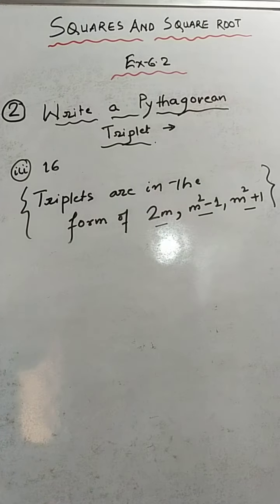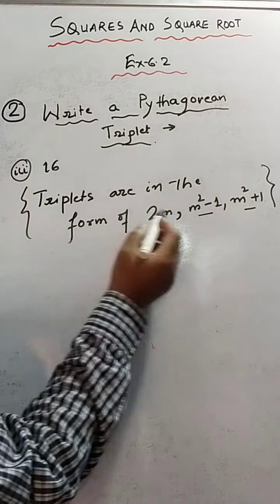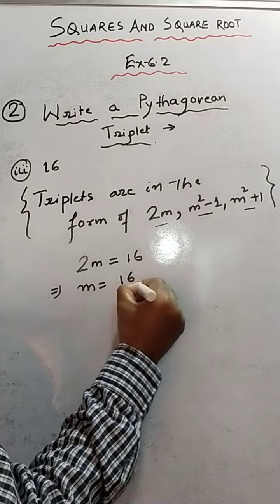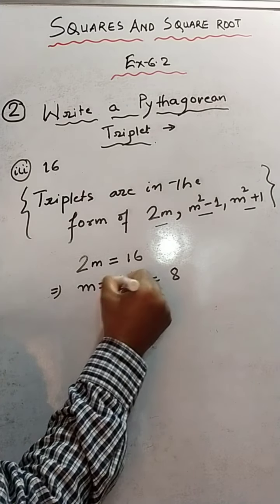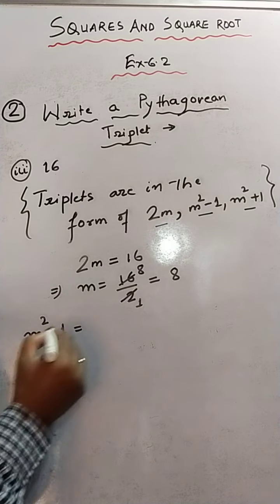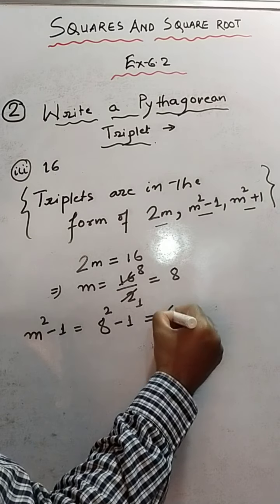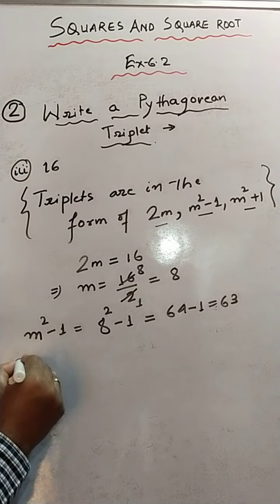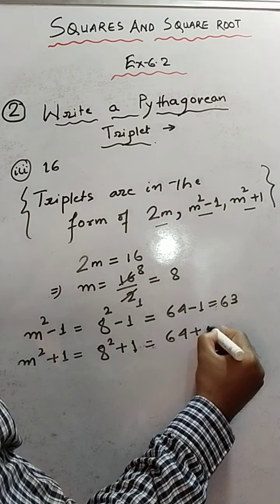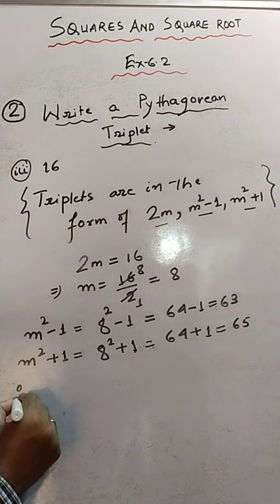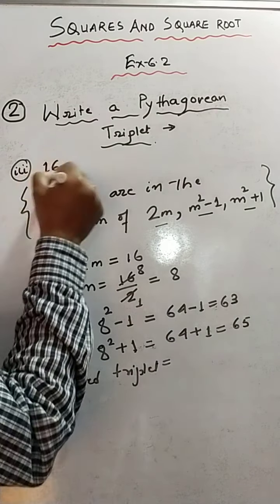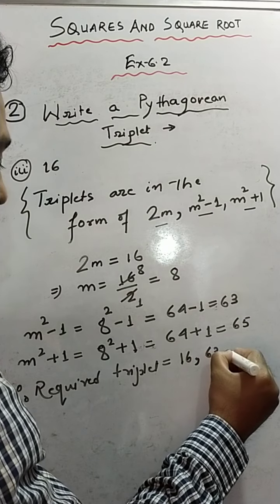For sum number 3, the given number is 16. We compare with 2m: 2m = 16, so m = 16/2 = 8. The second number: m²-1 = 8²-1 = 64-1 = 63. The third number: m²+1 = 8²+1 = 64+1 = 65. Therefore, the required triplet is 16, 63, and 65.